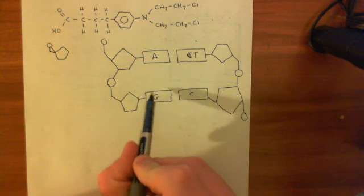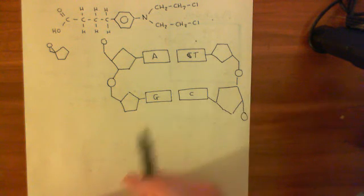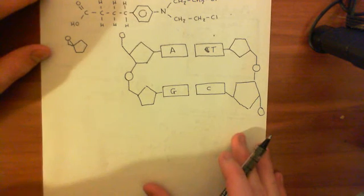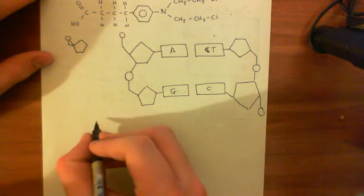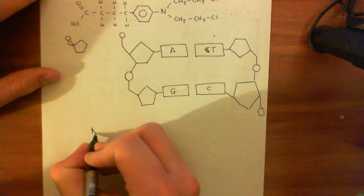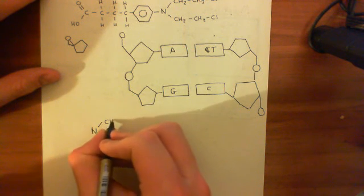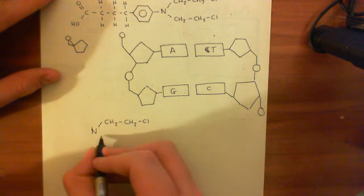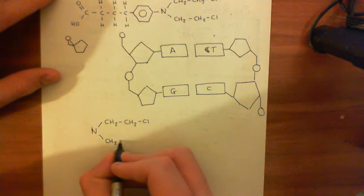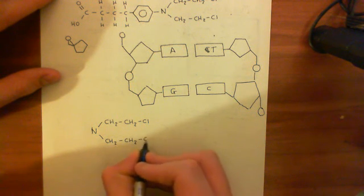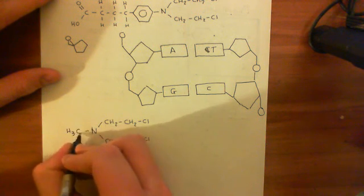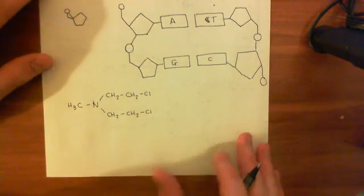These nitrogen mustard drugs are going to target guanine nucleotides within the DNA. So let's begin to see how. We will see this for the most simple nitrogen mustard — the nitrogen mustard, or mechlorethamine, or chlormethine, or HN2, whatever you want to call it. Here is the structure again of the nitrogen mustard: it has these two chloroethyl groups off this nitrogen atom, and it also has this methyl group off this nitrogen atom. We'll see its mechanism of action in the next video.